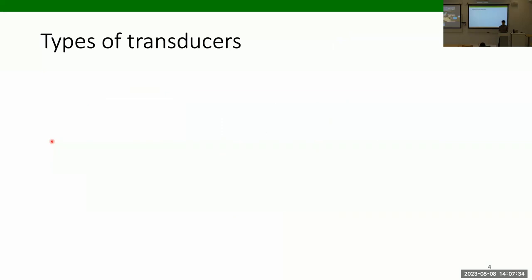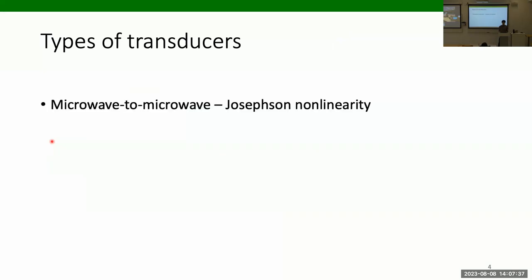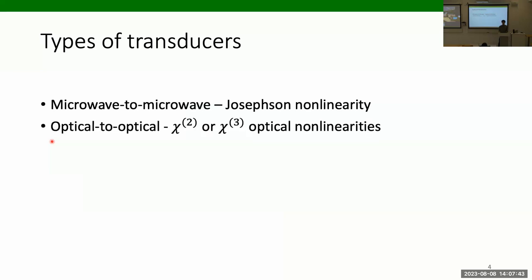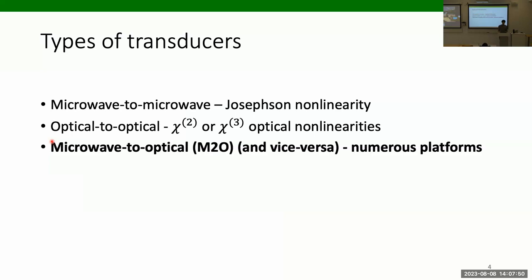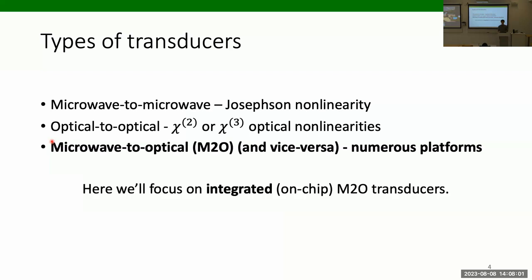There are several flavors of transducers. We can think of microwave-to-microwave transducers, which rely upon the Josephson nonlinearity; optical-to-optical transducers, which rely on bulk optical nonlinearities like Chi-2 or Chi-3 nonlinearities. The focus for us today is microwave-to-optical transducers, and in particular I'm going to restrict our discussion to integrated on-chip microwave-to-optical transducers.